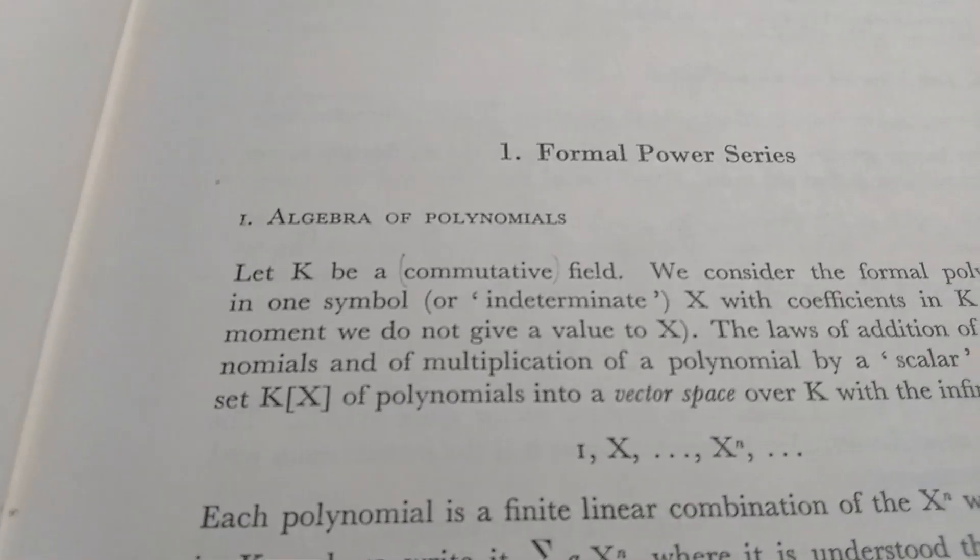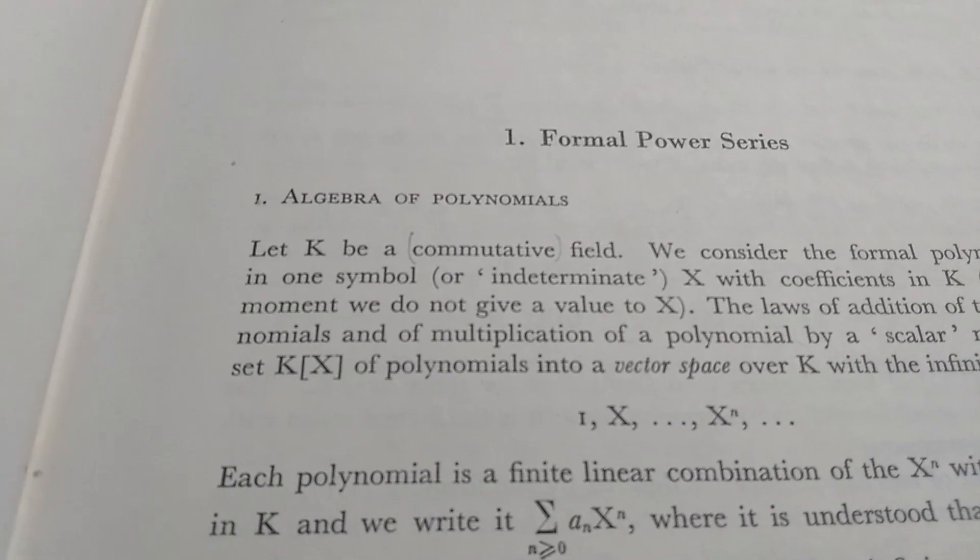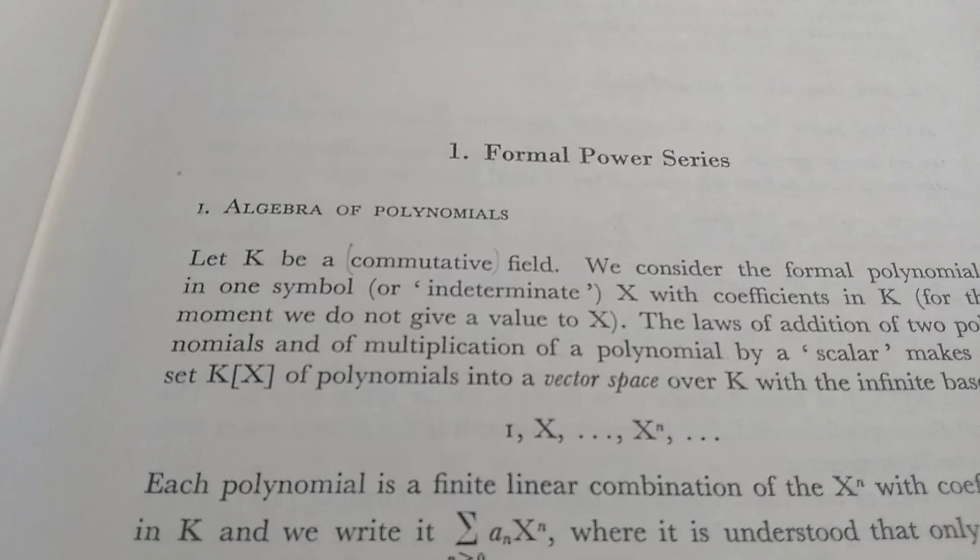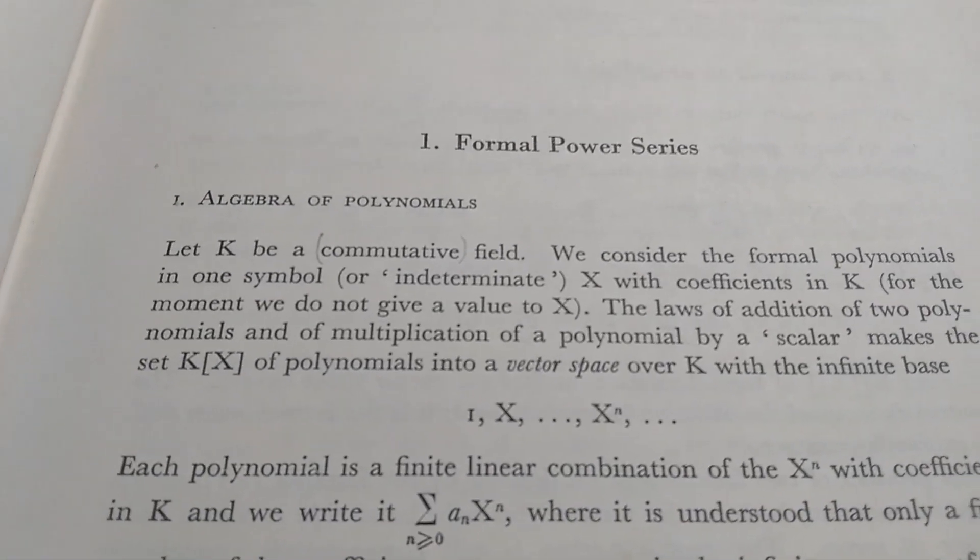So let K be a commutative field. Interesting, right? Nowadays in mathematics when you have a field, you assume it's commutative, so maybe his definition of field was different. We consider the formal polynomials in one symbol, and then he goes on.